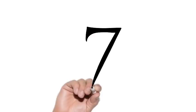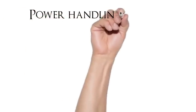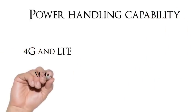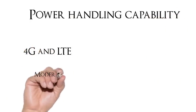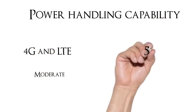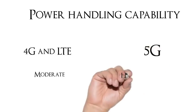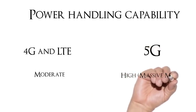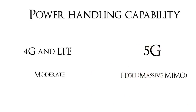Number 7: The power handling capability. For 4G and LTE, it's usually a moderate power handling capability that is required. For 5G, a high power handling capability is required, especially in massive and remote cases.